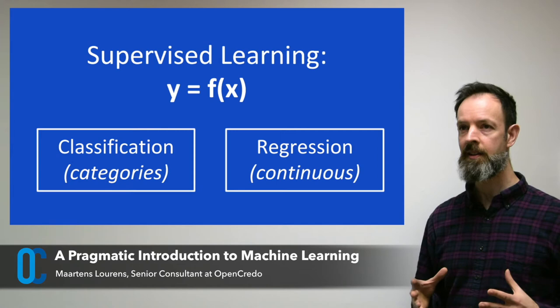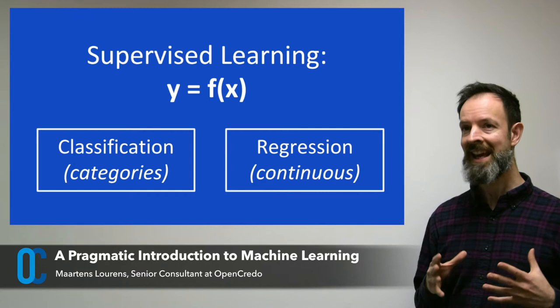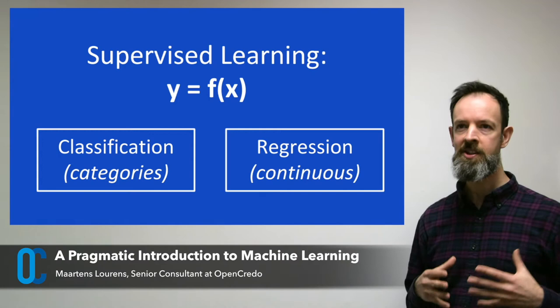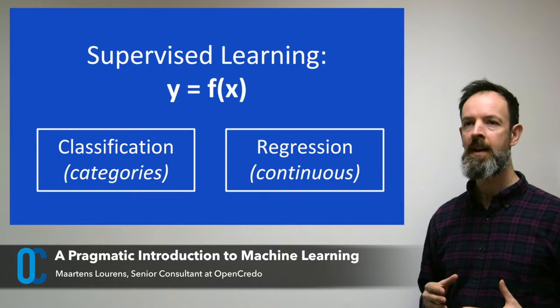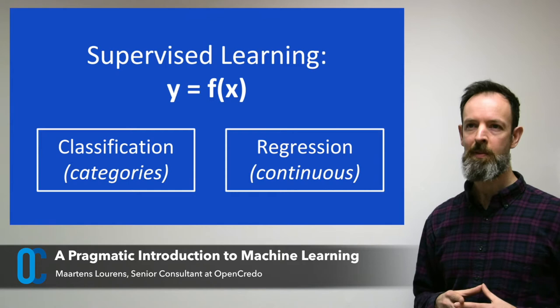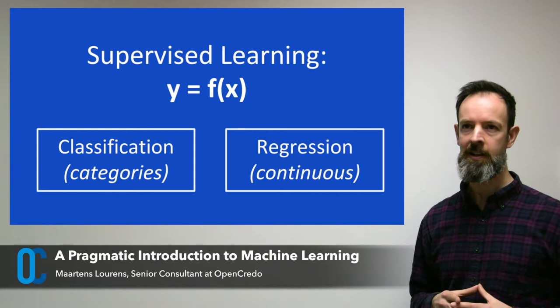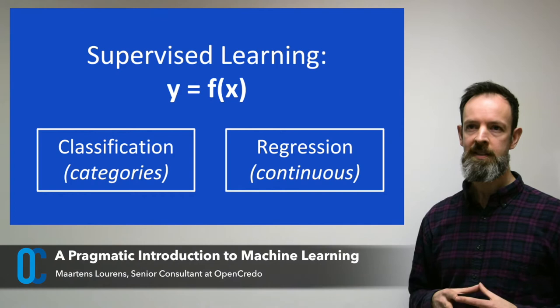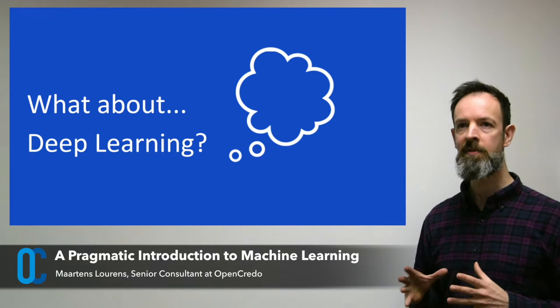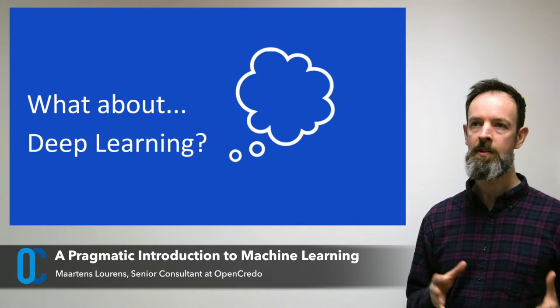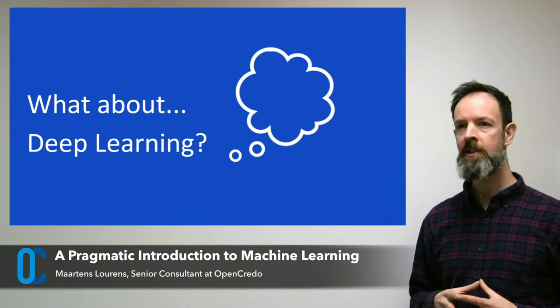Classification is a type of supervised learning task where there are discrete known categories to which a data instance can belong. The well-known MNIST challenge is an image classification problem of this kind, because the algorithm has to decide which of the 10 numerical digit categories — that is 0 to 9 — a particular image belongs to. Not all supervised learning problems aim to predict discrete categories; when the target is a continuous value, regression would be a more suitable approach. Deep learning is a subset of machine learning that can also encompass both supervised and unsupervised learning, and it typically performs feature learning and involves neural networks.